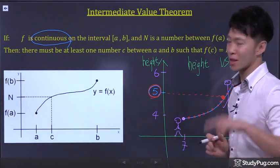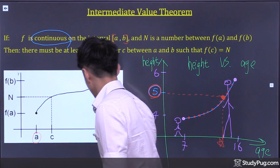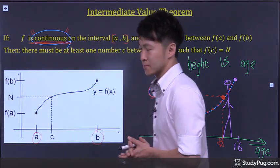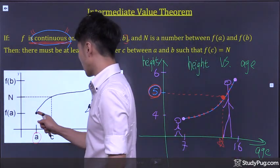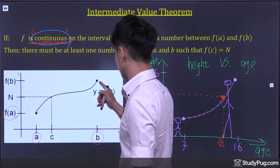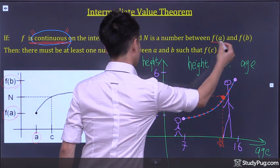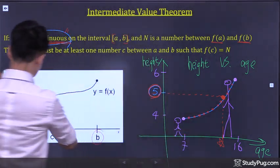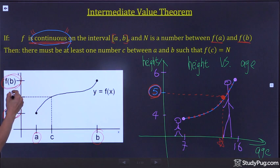So let's take a look at the official definition for the intermediate value theorem — a very intuitive theorem. If on the closed interval a and b, we have a continuous function — and the word continuous is the key word here — so a function is continuous between point a and point b, and at point a we have a value of f of a, and at point b we have a value of f of b. Now, if you want to pick a number between f of a and f of b — pick any number between f of a and f of b — so let's say we pick this number. We call the number n. So n is an intermediate value between f of a and f of b.